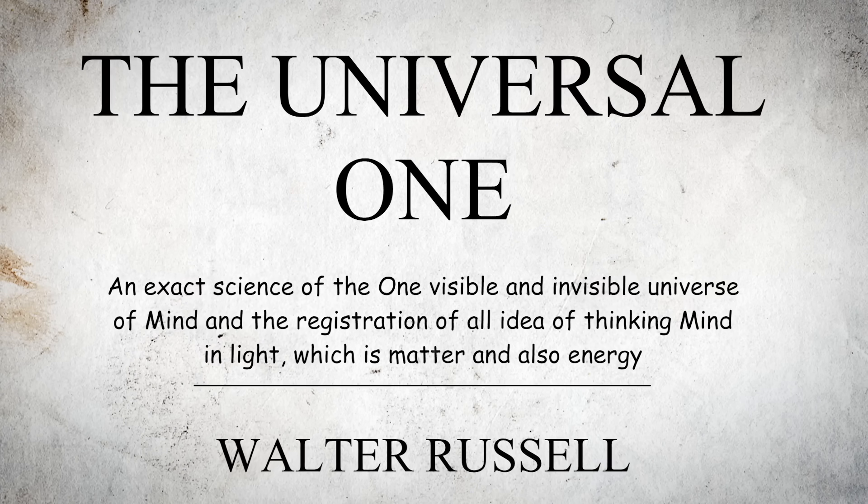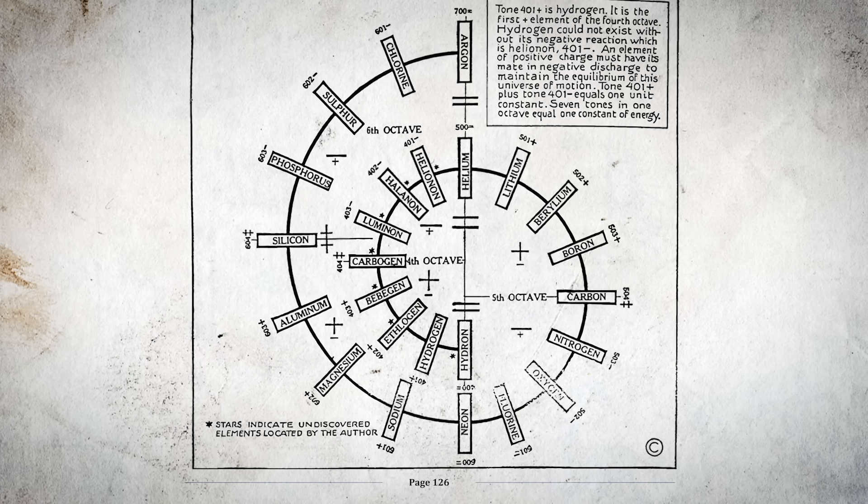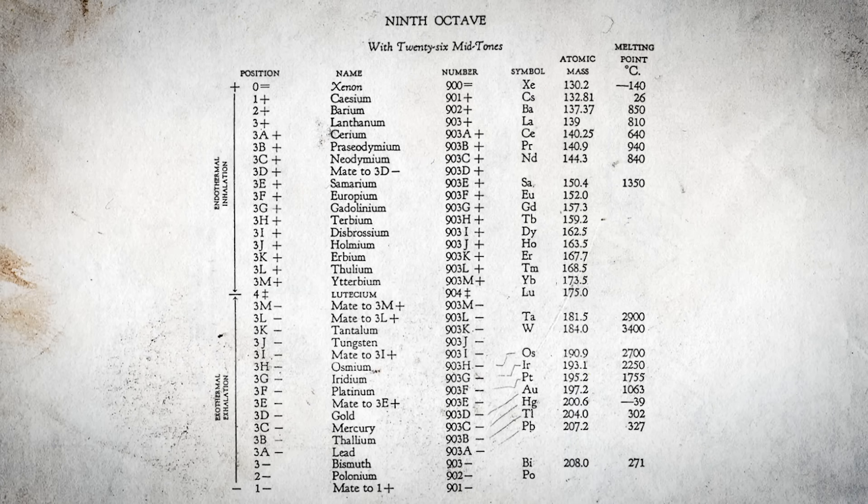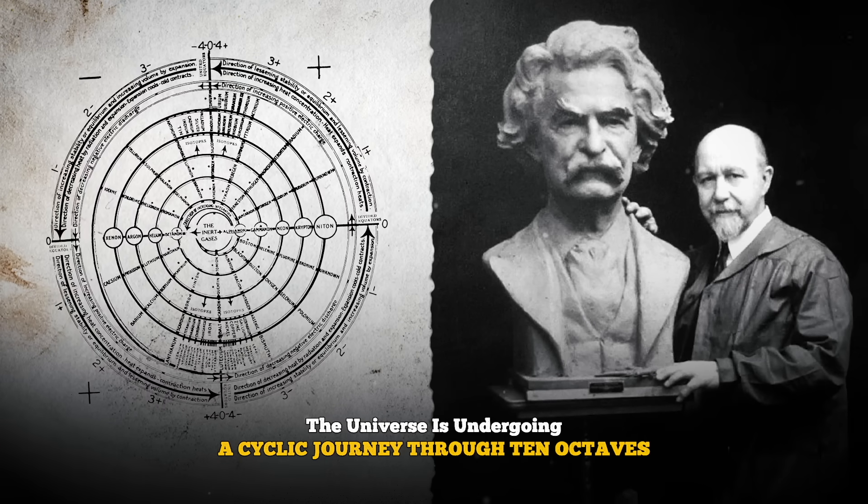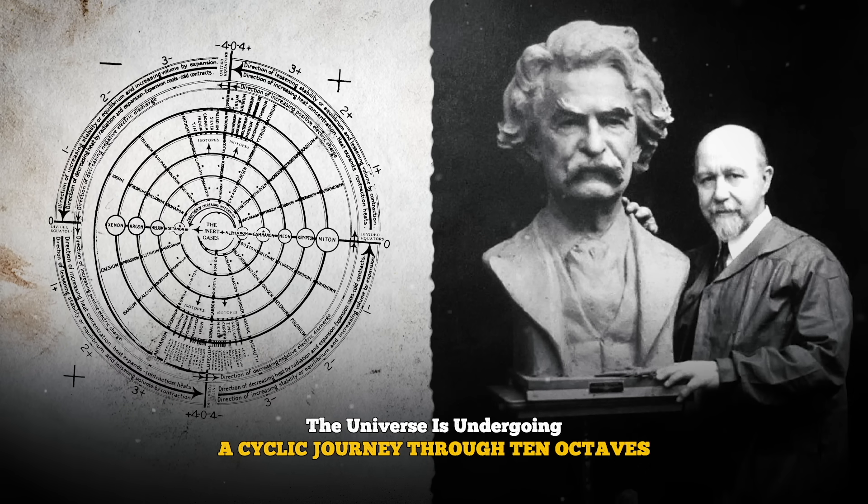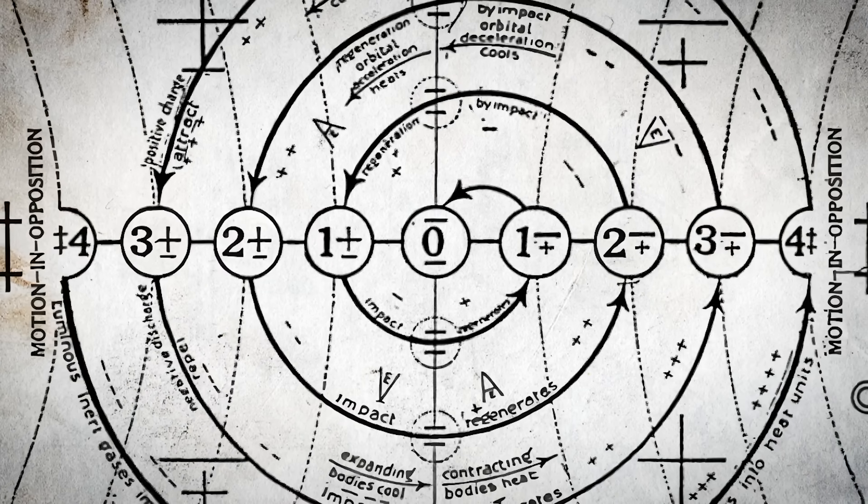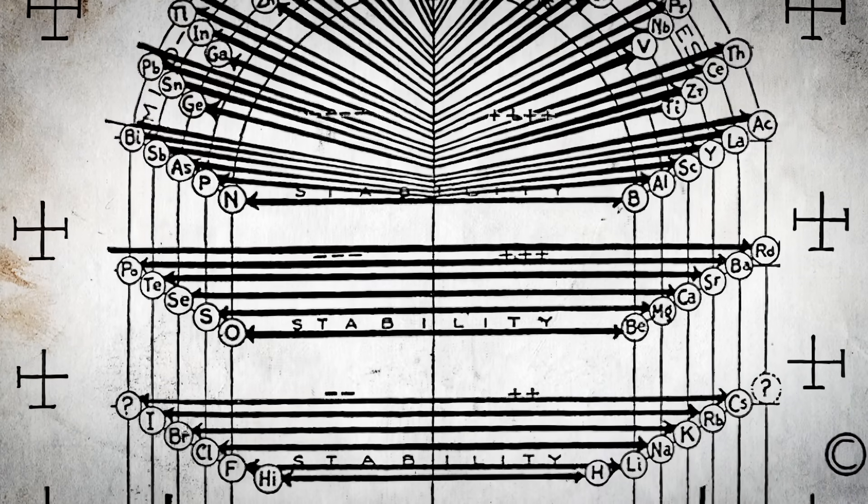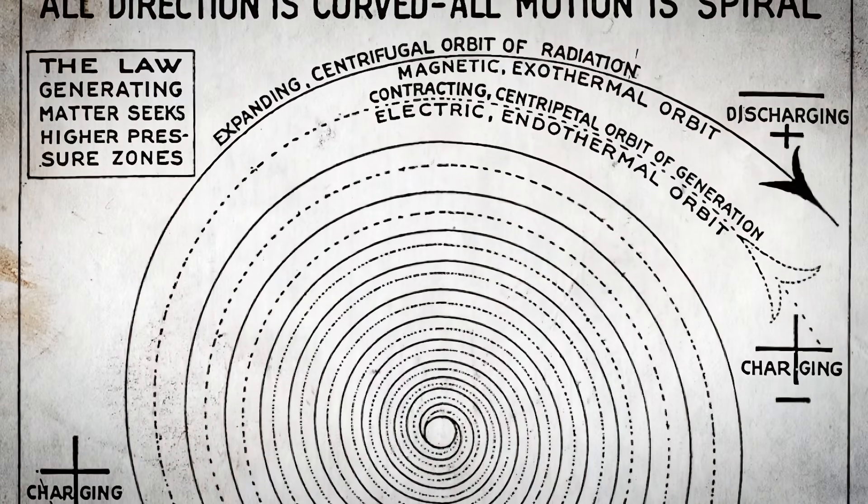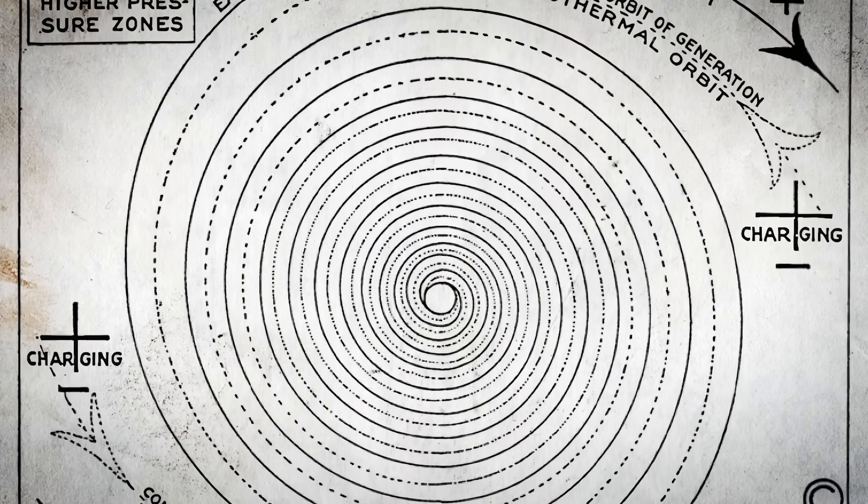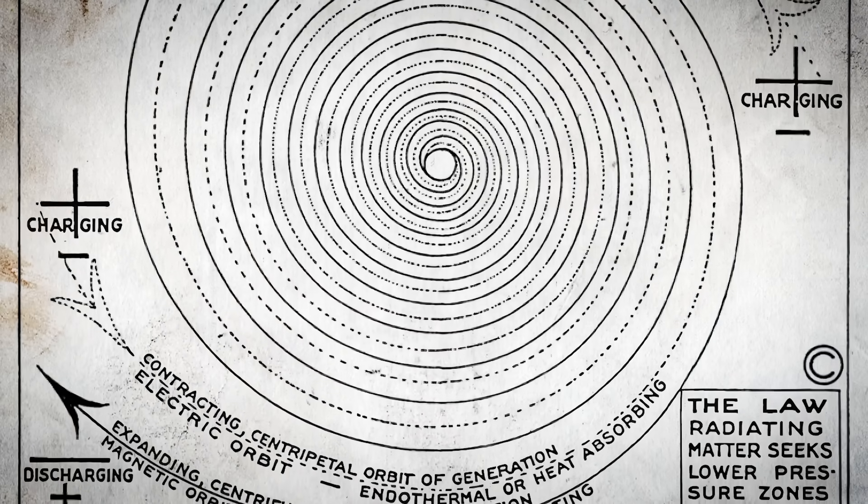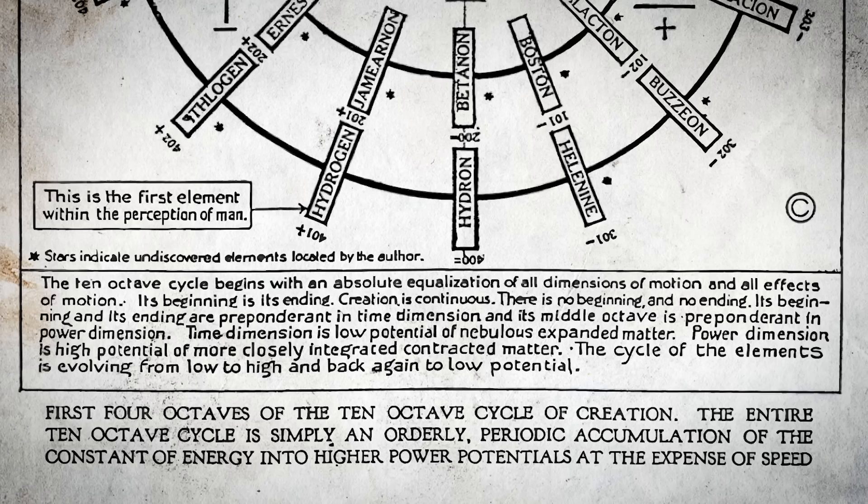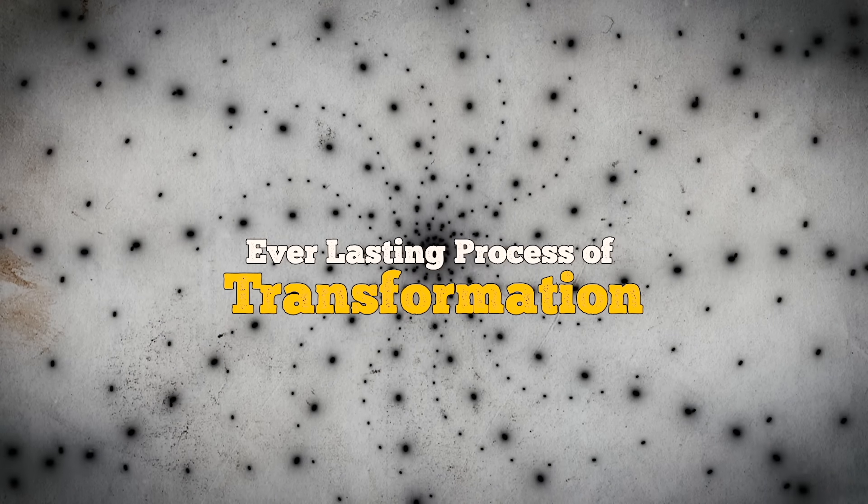In Walter Russell's The Universal One, page 126 provides an intriguing exploration of the ten-octave cycle of elements, blending scientific insight with philosophical depth. Russell begins by conceptualizing the universe as undergoing a cyclic journey through ten octaves, each representing a different phase in the transformation and progression of matter. This cycle, much like a loop, begins and ends at a point of absolute equilibrium, where all motions, whether kinetic, potential, or thermal, are perfectly balanced. As you can see in the illustration, this cyclical nature underscores the continuity of creation. There is neither a true beginning nor an ending, just an everlasting process of transformation.